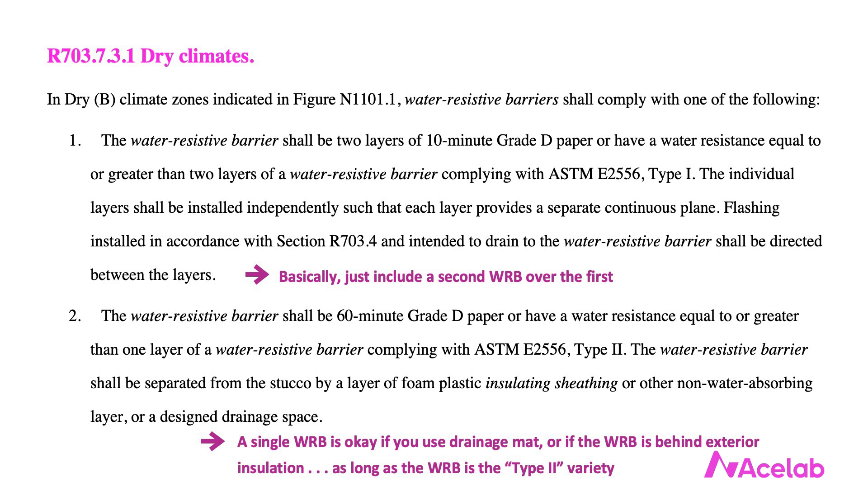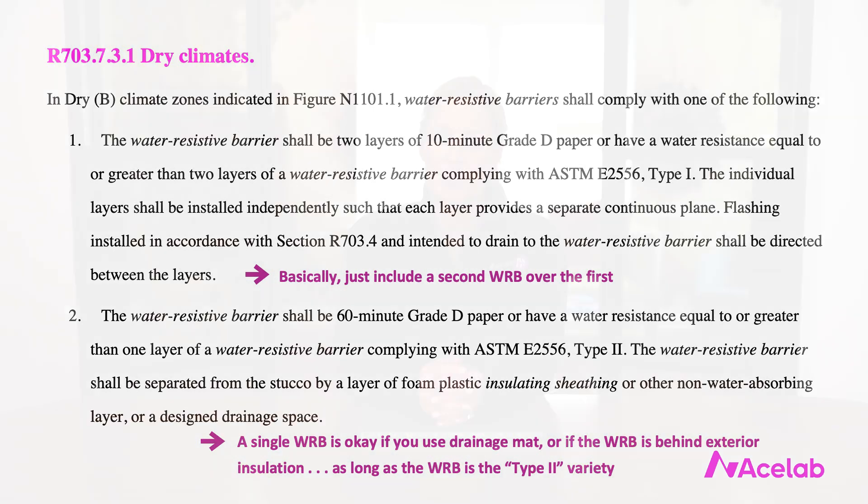The Type 1/Type 2 designations relate to the water holdout performance of the WRB — supposedly Type 1 is less robust than Type 2. But the way the types are determined has nothing to do with in-service performance and really shouldn't be referenced by the codes. To qualify as a Type 2 membrane, a horizontal sample is placed with an open cylinder on top, approximately 22 inches of water is added, and it must hold for five hours. That's about 112 psf — equivalent to approximately a 212 mph wind. For reference, the highest wind speed during Hurricane Katrina was 175 mph. This test doesn't match in-service performance at all.